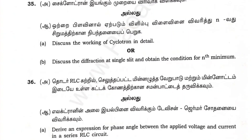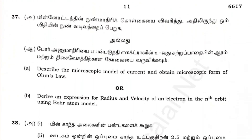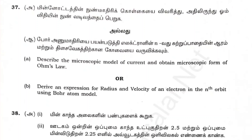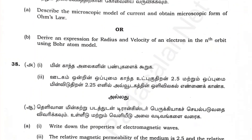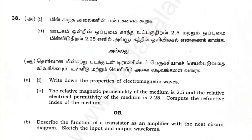2 mark, 4 mark. Look at the microscopic model of current and obtain the expression from Ohm's law. Derive the expression for radius and velocity of electron in the nth orbit using the Bohr atom model. Look at the current and obtain the microscopic expression from Ohm's law. This is the official public model.